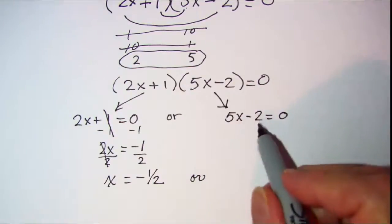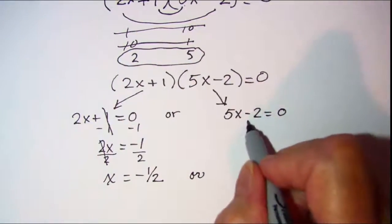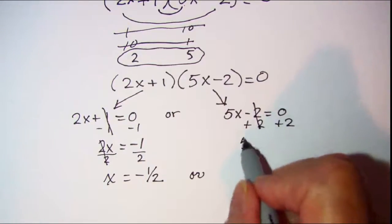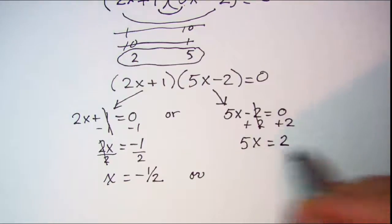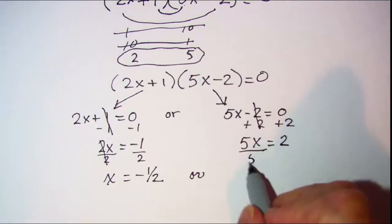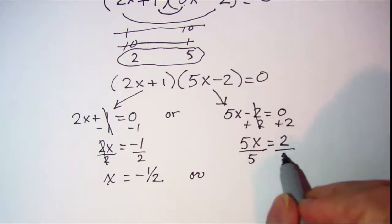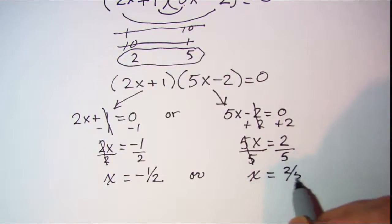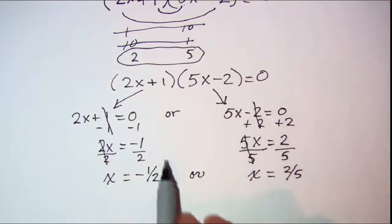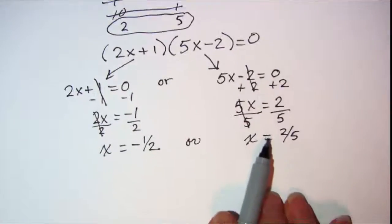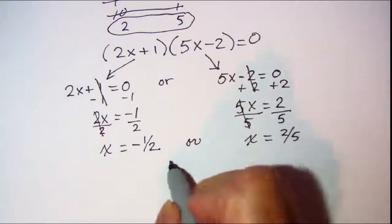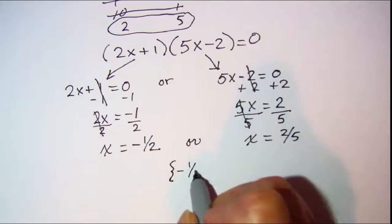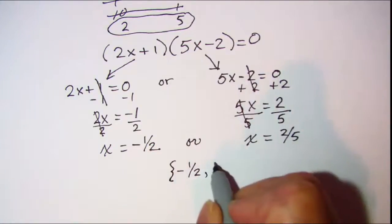For the second equation: 5x − 2 = 0. Add 2 to both sides: 5x equals positive 2. Divide both sides by 5: x equals two fifths. So these are my two solutions. I can write them as the solution set: negative one half and two fifths.